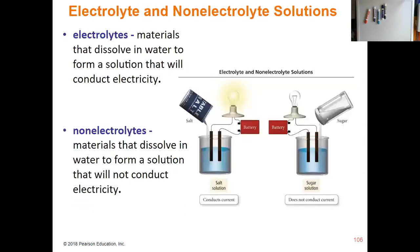A solution where you have a bunch of free charged particles moving in solution is an electrolyte solution. We call something an electrolyte if, when it dissolves in water, it can conduct electricity. So things like salts or ionic compounds that dissolve in water — those are electrolytes. Anything that dissolves and forms ions is an electrolyte.